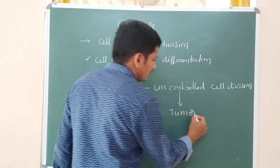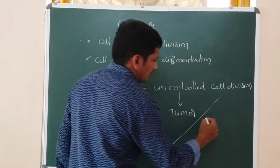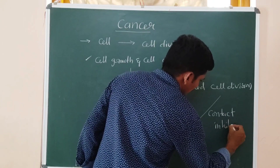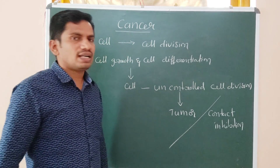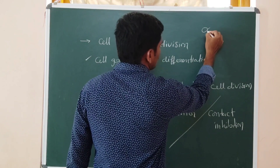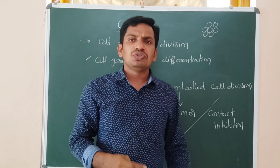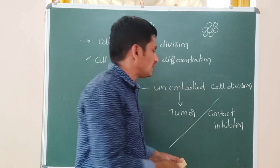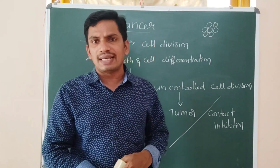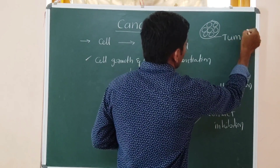The tumor formed can be called a cancerous tumor. Generally, normal cells have a property called contact inhibition. When a cell divides into two cells, the neighboring cells contact each other and division is controlled. But during cancer, cells lose contact inhibition, causing proliferation of large numbers of cells due to uncontrolled cell division. It forms a cell mass — we call it a tumor.